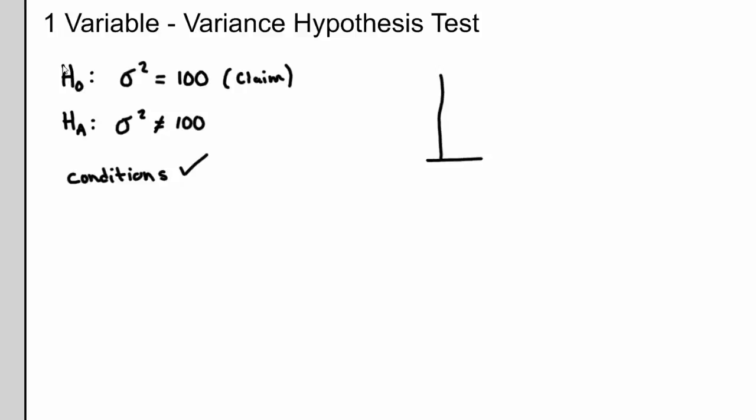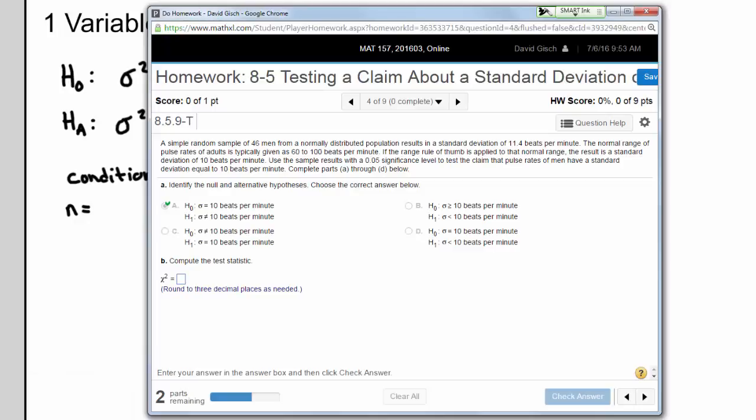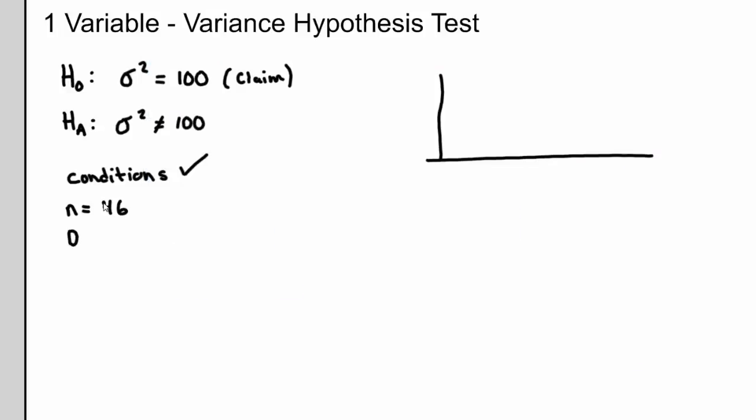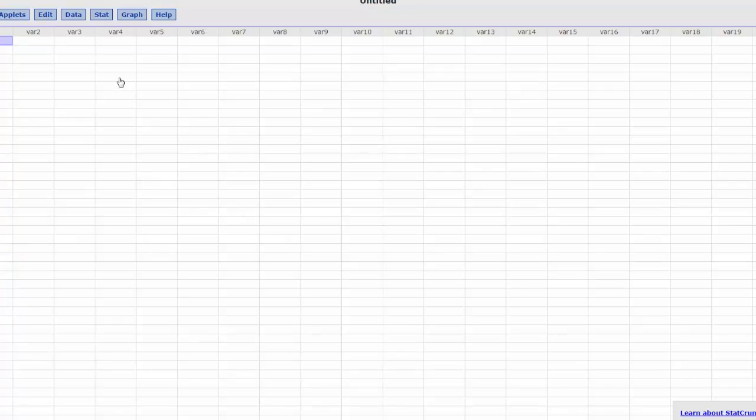So next thing I'm going to do is I'm going to work on my critical value. Remember, n was, what was it, 45? Let's check it out. 46. n was 46 and alpha is 0.05 as usual. So n was 46, by the way, that means our degrees of freedom is n minus 1, so 45. Alpha is 0.05. Now, because the alternative, alternative always tells you where the rejection region. Because the alternative is not equals, that's going to tell us this is two-tailed. So I need to go look up my critical values, get some rejection regions, and get that going. So I'm going to do that in StatCrunch.